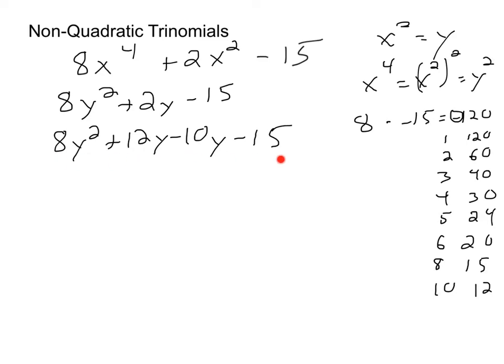Now we can do a little grouping. 8y squared plus 12y, negative 10y minus 15. We're going to group those two. The first two share a 4y, leaving behind 2y plus 3. I'm really hoping that when I factor these, I'm left with 2y plus 3.